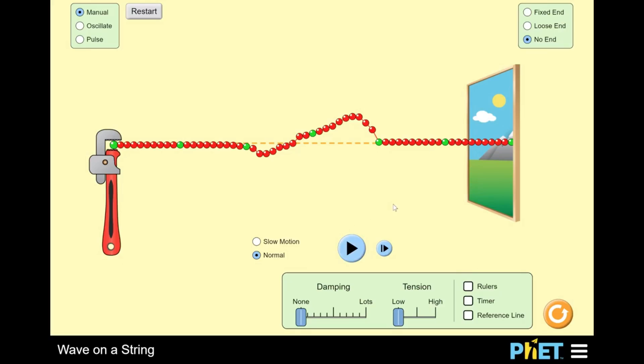So sometimes we call that a snapshot graph. This is the snapshot graph, this is like the snapshot graph for the wave at a particular time. It's really just a picture of the wave.